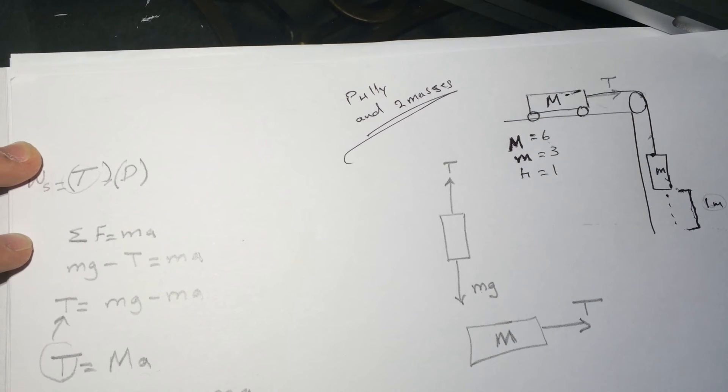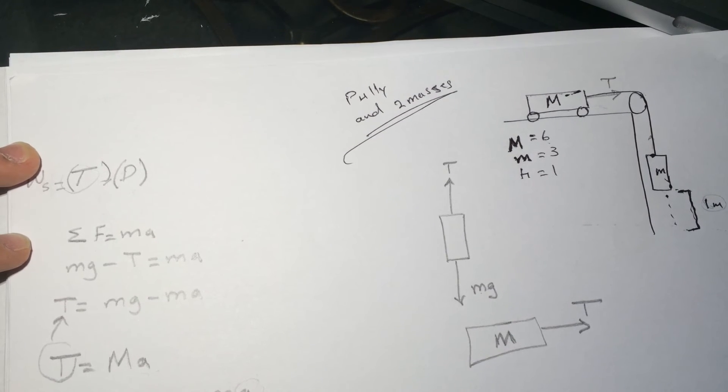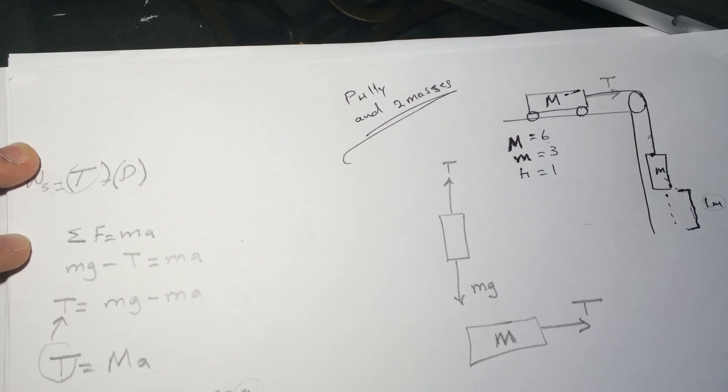So let's substitute this T back into this equation. So big M times a equals small m times g minus m times a. Now solve the problem for a. Put the actual numbers in and solve for a, and you'll get the value for a.